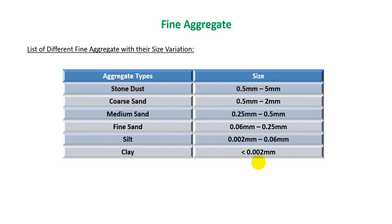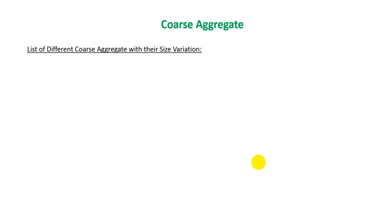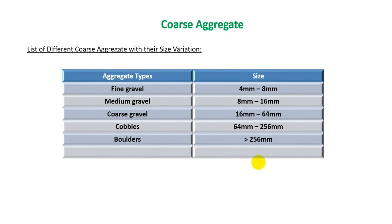These types of sand are very useful. If we go for coarse aggregate, similarly we have divided coarse aggregate according to size. Fine gravel is 4 mm to 8 mm, medium gravel is 8 mm to 16 mm, coarse gravel is 16 mm to 64 mm, cobbles are 64 mm to 256 mm, and boulders are more than 256 mm.